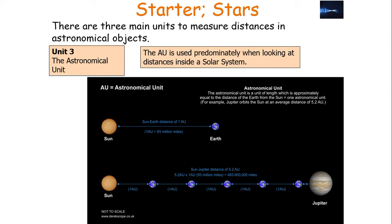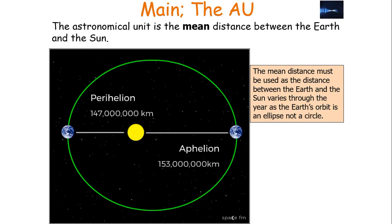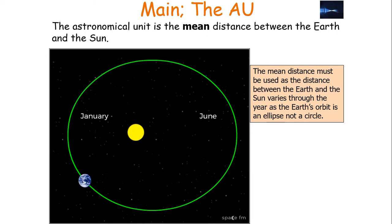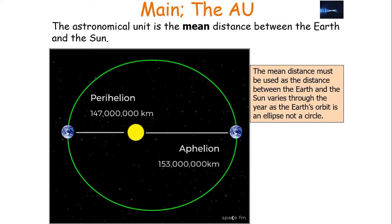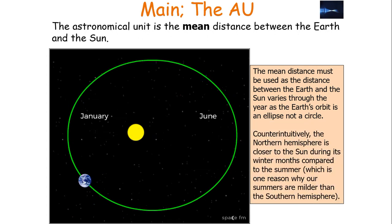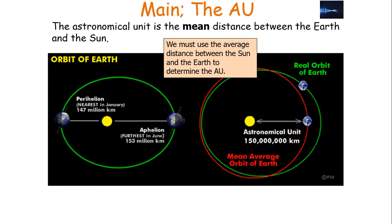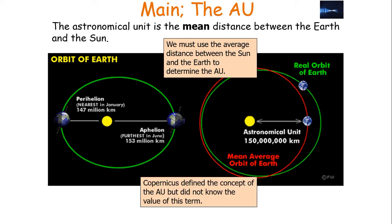The AU is used predominantly when looking at distances inside our solar system. The astronomical unit is the mean distance between the Earth and the Sun. The mean distance must be used as the distance between the Earth and the Sun varies throughout the year, as the Earth's orbit is an ellipse and not a circle. As the Earth orbits the Sun, the distance between the Earth and the Sun is changing, so we have to use the mean distance. We are using the average distance between the Sun and the Earth to determine the astronomical unit.